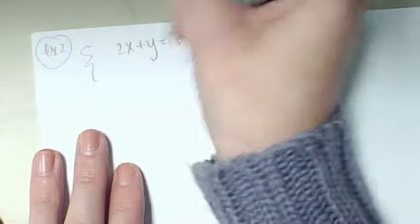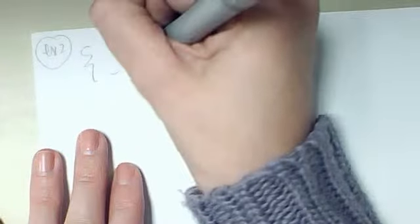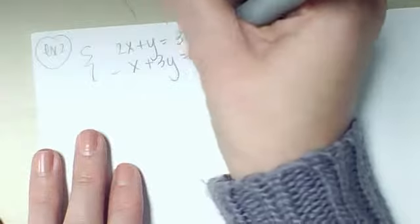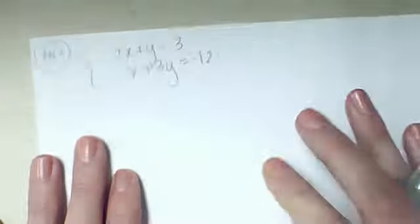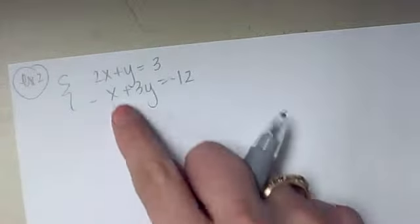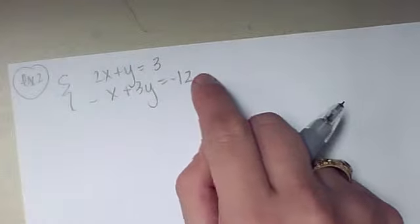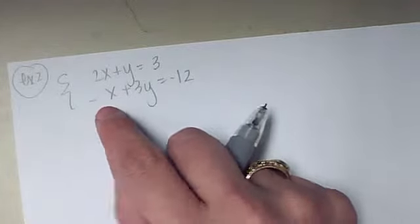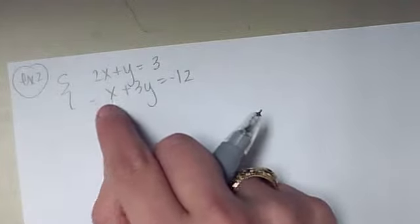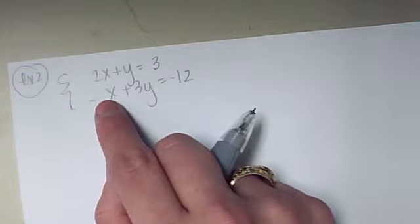If I flip to the other side of my foldable I'm going to try two more examples. Example number 2 is 2x plus y equals 3, and negative x plus 3y equals negative 12. Now in this one I'll notice that they are lined up—my x's, my y's, and my numbers. But there isn't anything that cancels because while this one is negative it's not negative 2x, which would have to be the exact opposite to make it cancel.